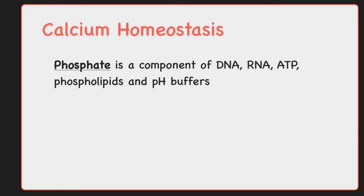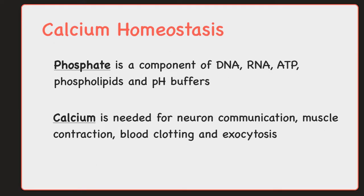Calcium is needed in neuron communication — that's important when your neurons are talking to each other, allowing you to think and to move. Calcium is also involved in muscle contraction, allowing those muscles to contract, blood clotting, and exocytosis. So calcium and phosphate are very much needed to remain in the blood, and the body has to have enough of this in the blood, as well as enough to also contribute to the bone matrix.